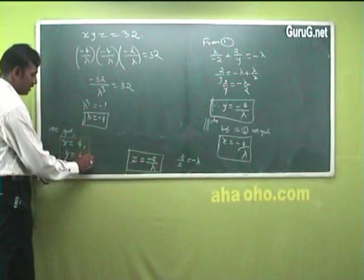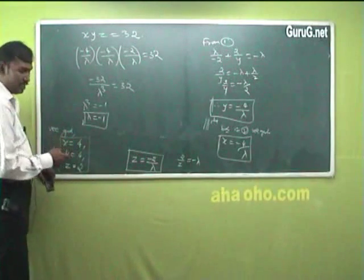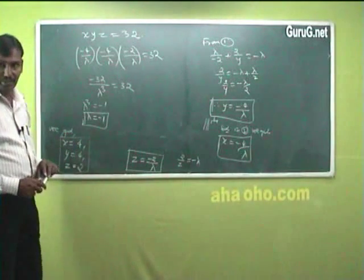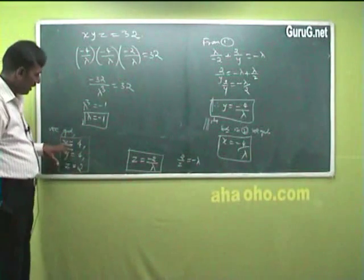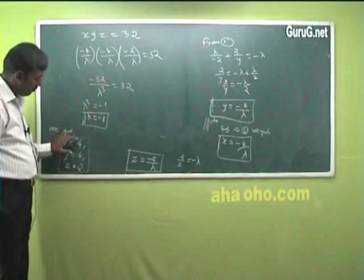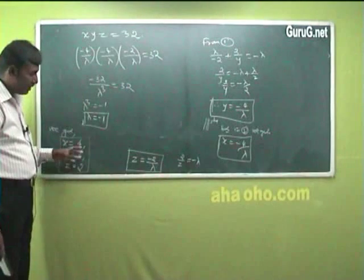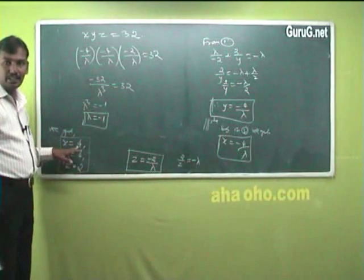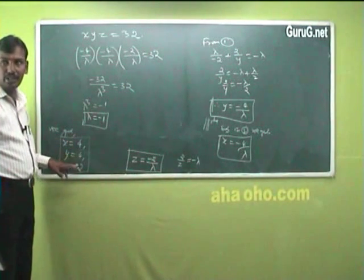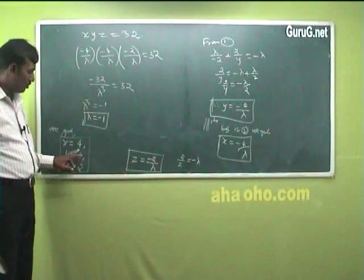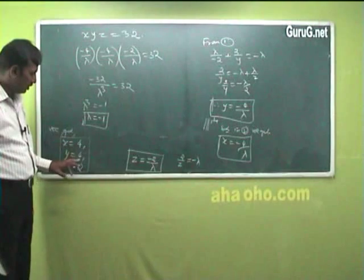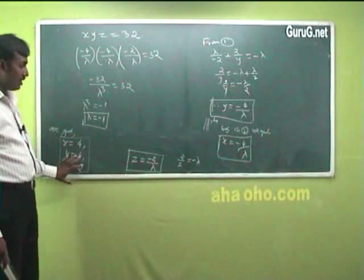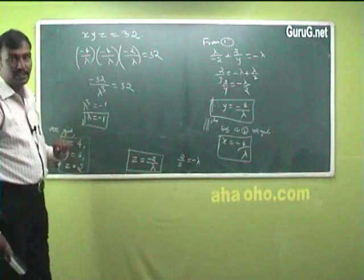These are the dimensions of the rectangular box: length = 4, breadth = 4, height = 2. Multiplying these gives the volume: 4 × 4 × 2 = 32, which confirms our answer.